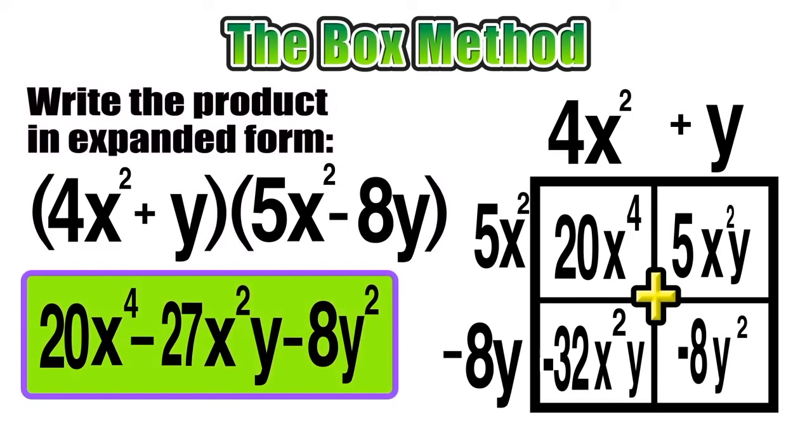Now just a quick note that not every example will include like terms, so make sure you always check to see if there are like terms, but if there aren't, that's okay, just go forward with it anyway. I really like the box method versus things like double distribution or the distributive method because it's very visual, it's very organized, and it reduces the amount of mistakes that you'll make.